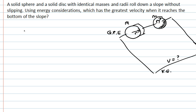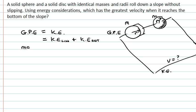By the law of conservation of energy, the gravitational potential energy at the top will equal the kinetic energy gained by each object at the bottom. For a rolling object the kinetic energy comes in two parts: a linear component given by half times mass times velocity squared, and a rotational component given by half times the moment of inertia times the angular velocity squared.